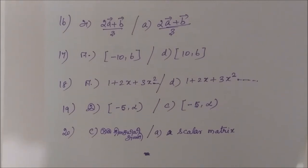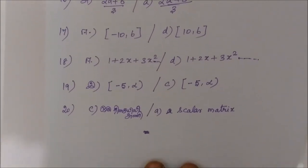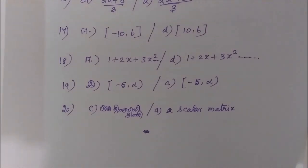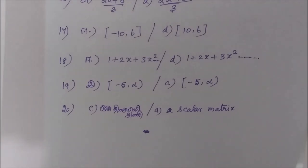Then question number 19: option C, minus 5 to infinity, closed interval. Then for question number 20: option A, it is a scalar matrix. Thank you.